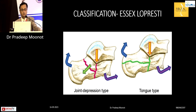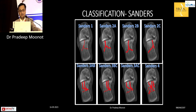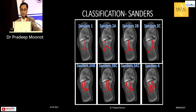On classification, the key distinction is between a joint depression type and a tongue type, because this determines whether you go operative or non-operative, and if operative, whether it is percutaneous or open. The Sanders classification uses the coronal CT view: Sanders 1 is undisplaced; Sanders 2 has two pieces; Sanders 3 has three pieces; and Sanders 4 is a completely comminuted fracture.